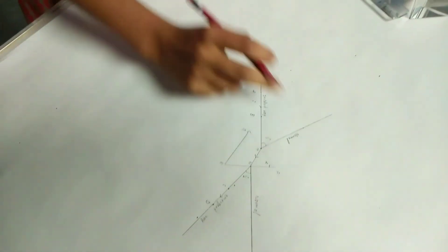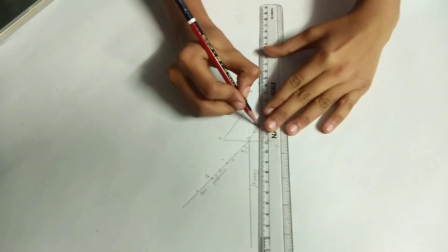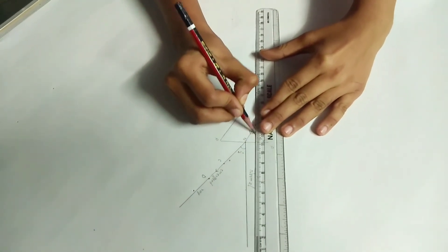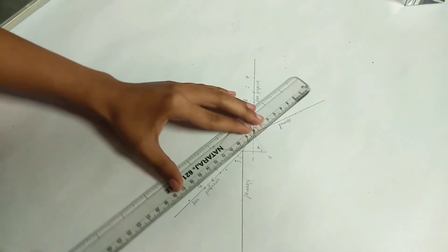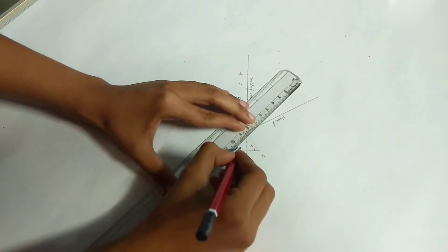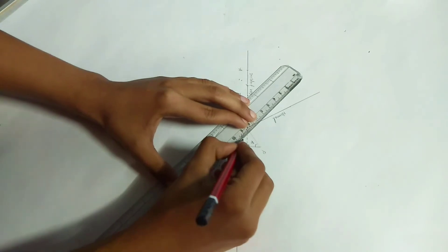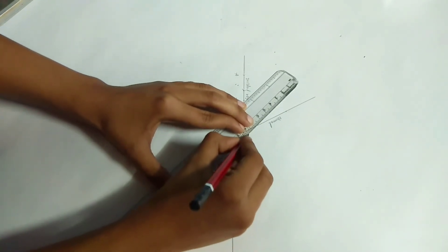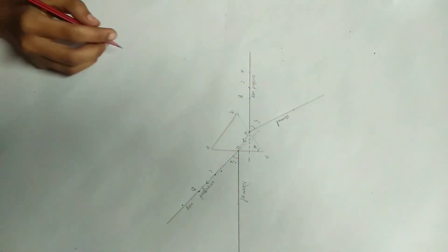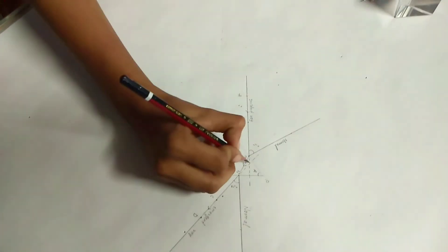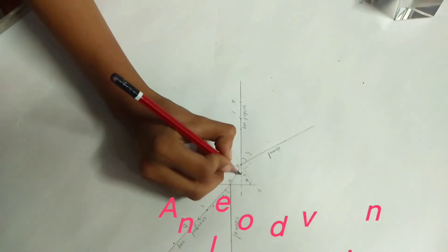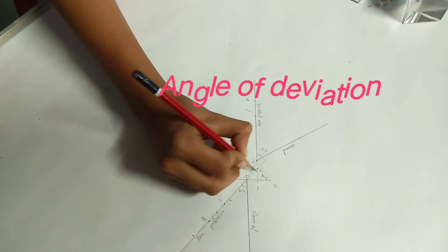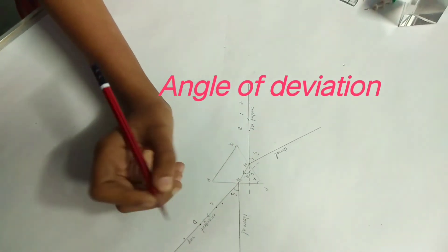Now, extend incident ray forward, emergent ray backward till they meet at point O. The angle between two rays is an angle of deviation which is denoted by D.